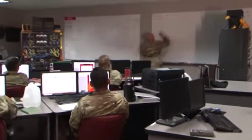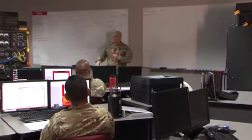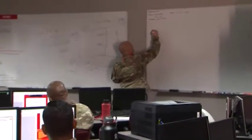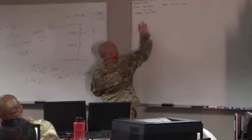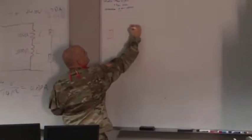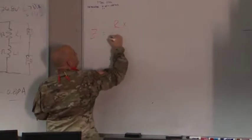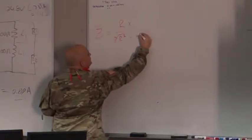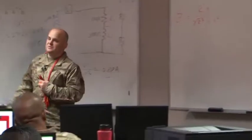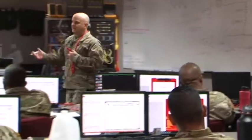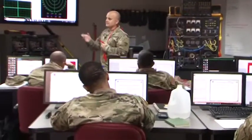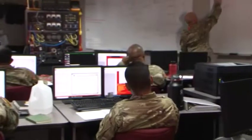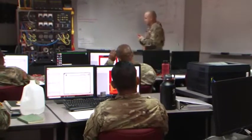In a parallel circuit — a parallel RC, RL, or RLC circuit — when you want to find the impedance, the formula is: Z equals R times X over the square root of R squared plus X squared. That X is going to be whatever the delta is between the capacitance and the inductive reactance. So when you see X in there, you're just talking about a delta.